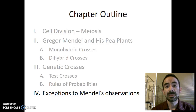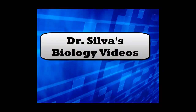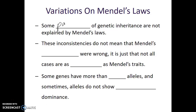Now let's talk about some exceptions to Gregor Mendel's observations. Some patterns of genetic inheritance are not explained by Gregor Mendel's laws. These inconsistencies do not mean that Mendel's conclusions were wrong — it's just that not all cases are as simple as the traits that Mendel looked at.